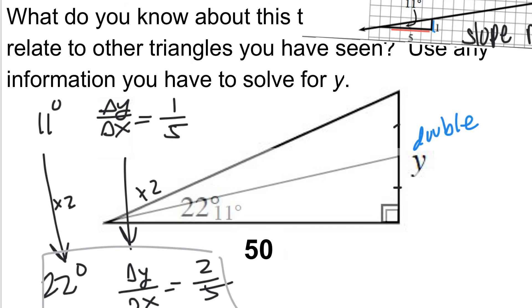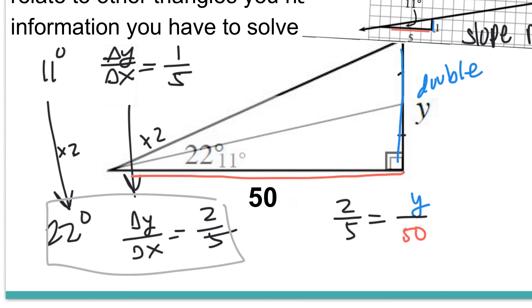My slope ratio is always going to equal change in Y over change in X. In this case, change in Y is just Y - we don't know it. Change in X is 50. You could go ahead and keep going, and you will get something like 100 equals 5Y, and Y equals 20.